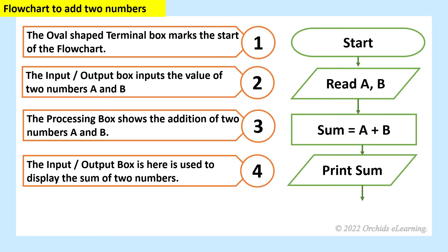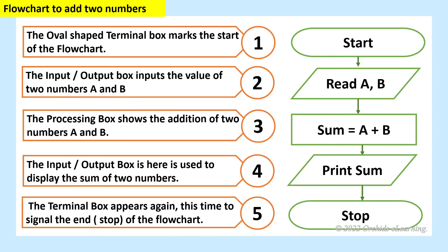The input or output box is here used to display the sum of two numbers. The terminal box appears again, this time to signal the end or stop of the flow chart.